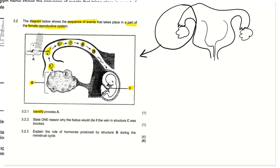You have to identify process A. Let us look carefully at the diagram — where is A located? Process A is here. They have actually zoomed in something like this. So this is what's happening at this point, and they want us to identify that process.